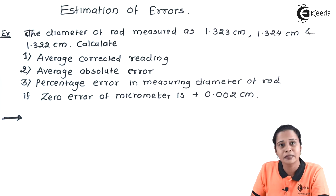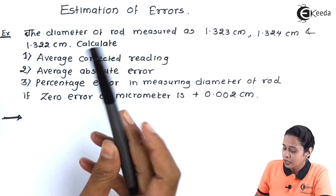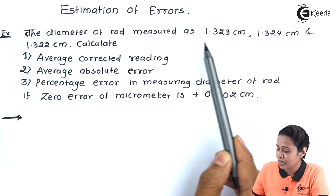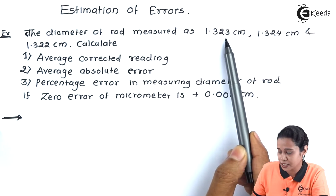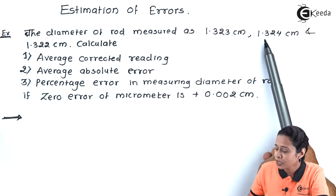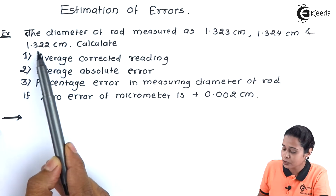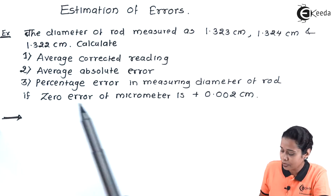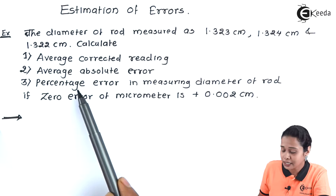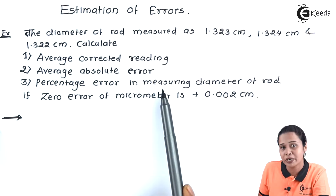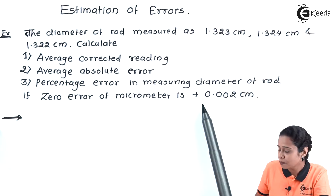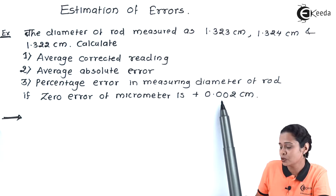To understand the concept of estimation of error, we will take one simple example. The diameter of a rod is measured as 1.323 cm, 1.324 cm, and 1.322 cm. Calculate the average corrected reading, average absolute error, and percentage error in measuring the diameter of the rod, given that the zero error of the micrometer is +0.02 cm.